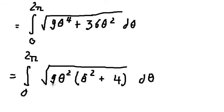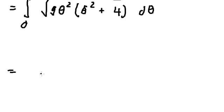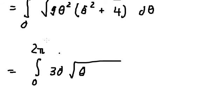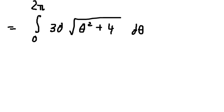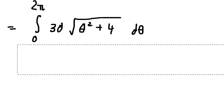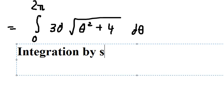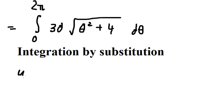We take the square root of 9θ², which simplifies the expression. Next we need to use integration by substitution.